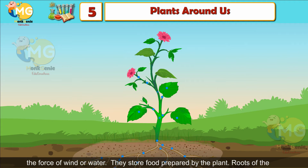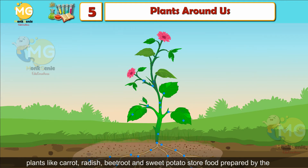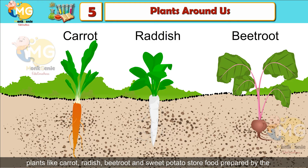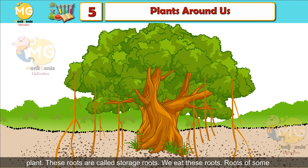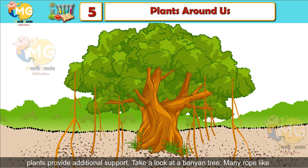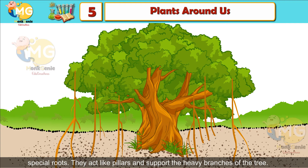Soil erosion is the removal of topsoil due to the force of wind or water. Roots also store food prepared by the plant. Roots of plants like carrot, radish, beetroot, and sweet potato store food and are called storage roots. Some roots provide additional support — for example, the banyan tree has rope-like hanging roots called special roots that act like pillars and support the heavy branches.